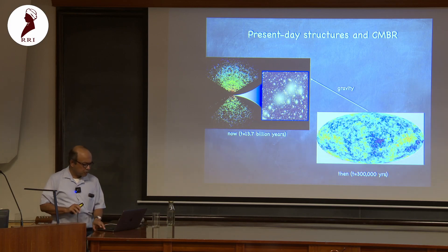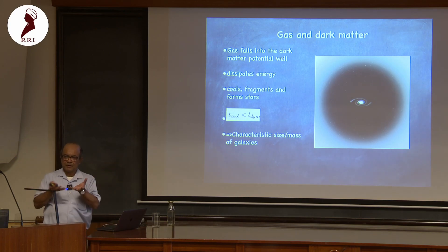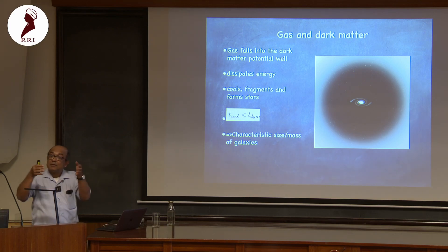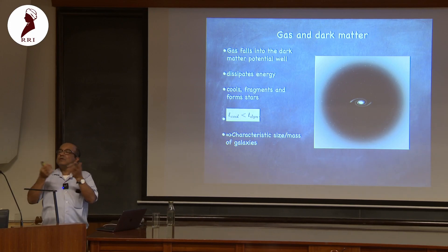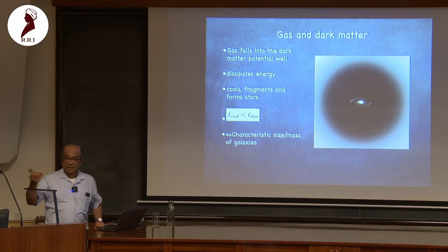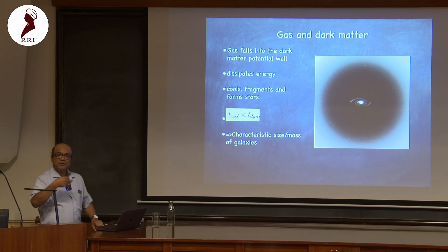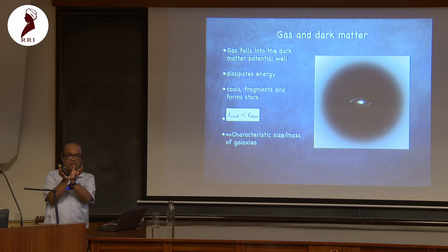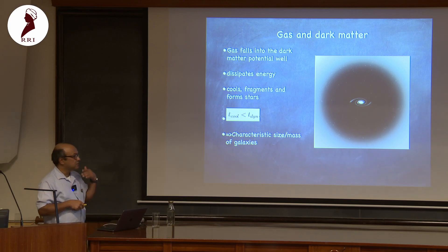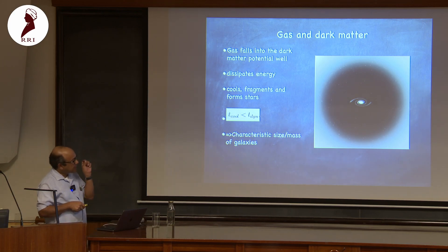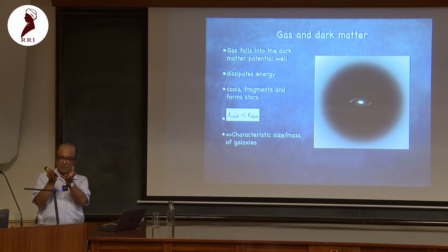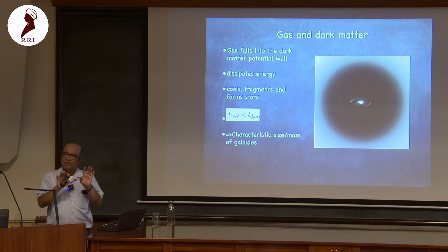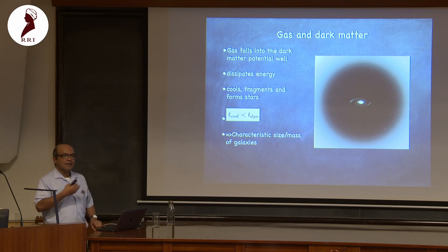Dark matter clumps form the potential wells, but dark matter is collisionless — it interacts only gravitationally and doesn't dissipate. Normal matter, however, does dissipate, so when it falls into a dark matter potential well it dissipates energy and angular momentum, shrinks in size, occupies a smaller volume, cools, fragments, and forms stars. The galaxy then becomes luminous. The key prescription is that the cooling time has to be less than the dynamical timescale — this simple condition actually tells us a lot about galaxy formation, giving a characteristic size and mass of galaxies.